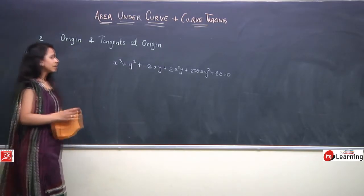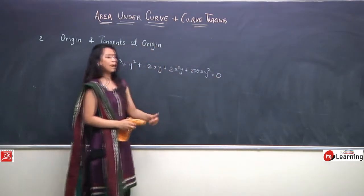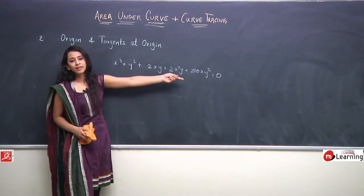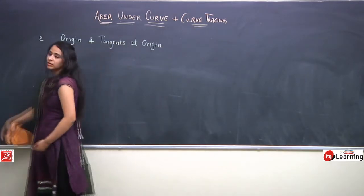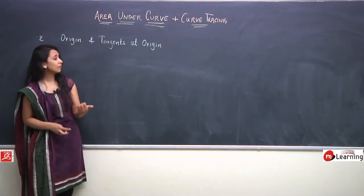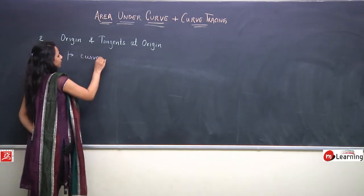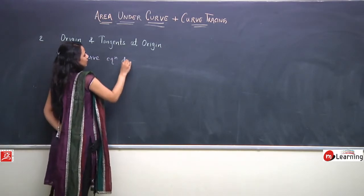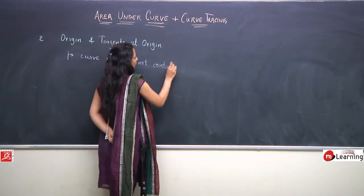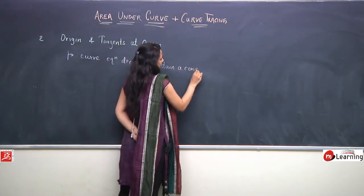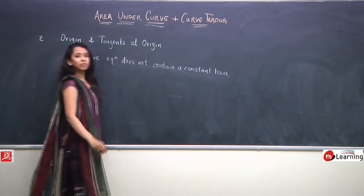Alternatively, if we remove the constant term 20 from the equation, the curve passes through origin because (0,0) satisfies the equation. So there are two ways: either we substitute (0,0) in the equation, or if the curve equation does not contain a constant term, then the curve passes through origin.